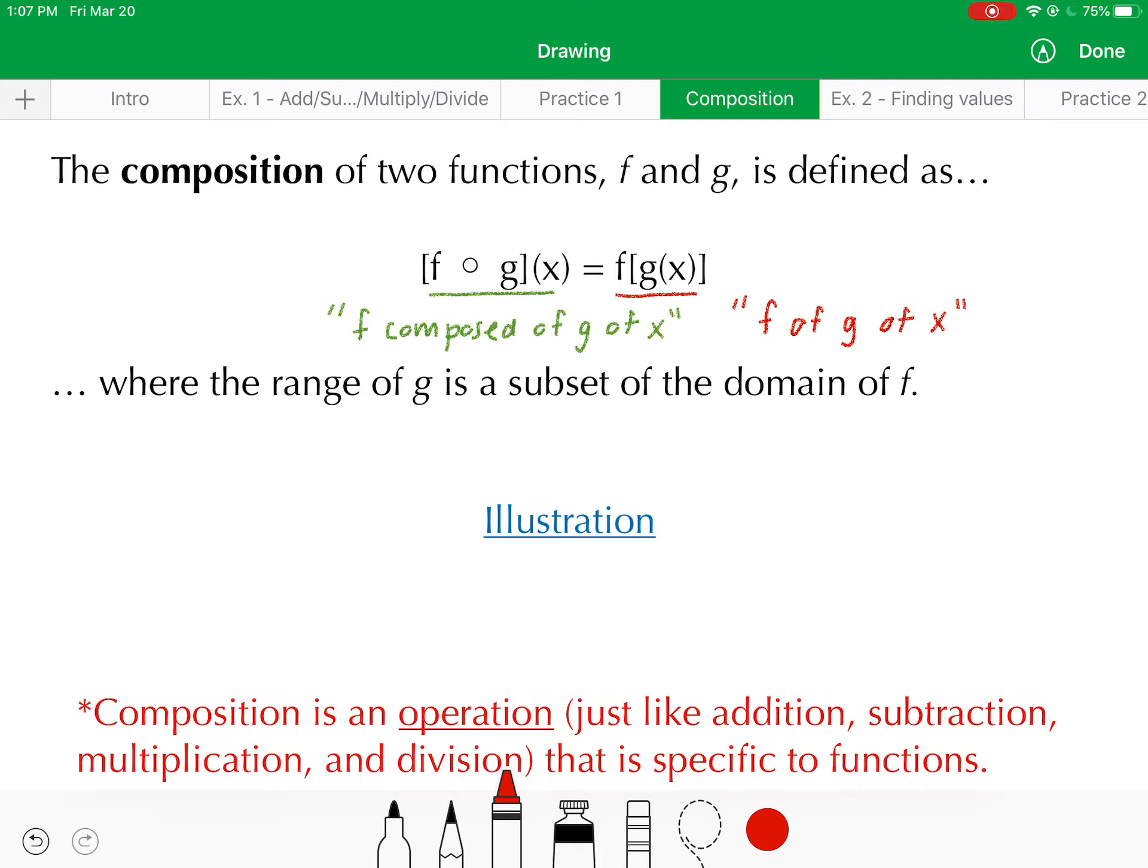Now, what happens in a composition is the range of the inner function, which in this case is g, becomes the domain of the outer function, which is f. So by range of g, we're talking about the y values of g. Those y values in a composition turn into the x values of the outer function, in this case f. Let me give you an illustration to better understand that.